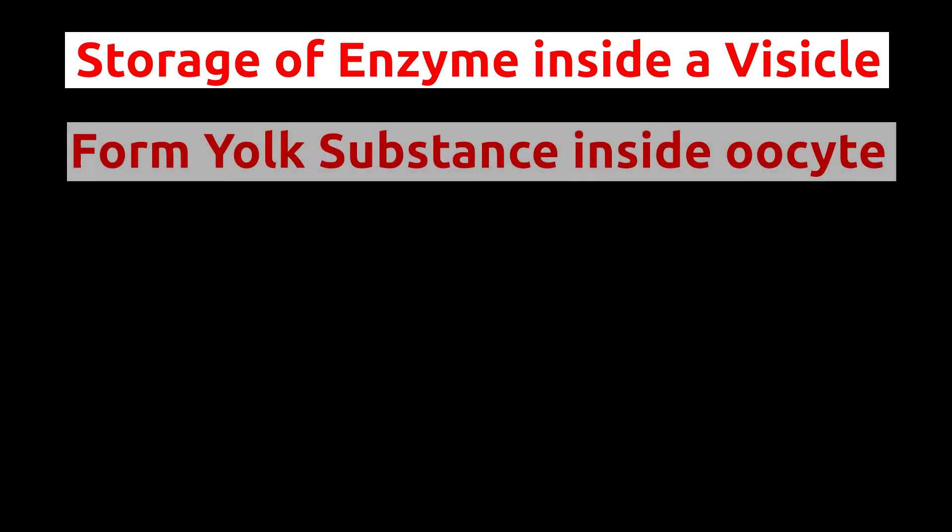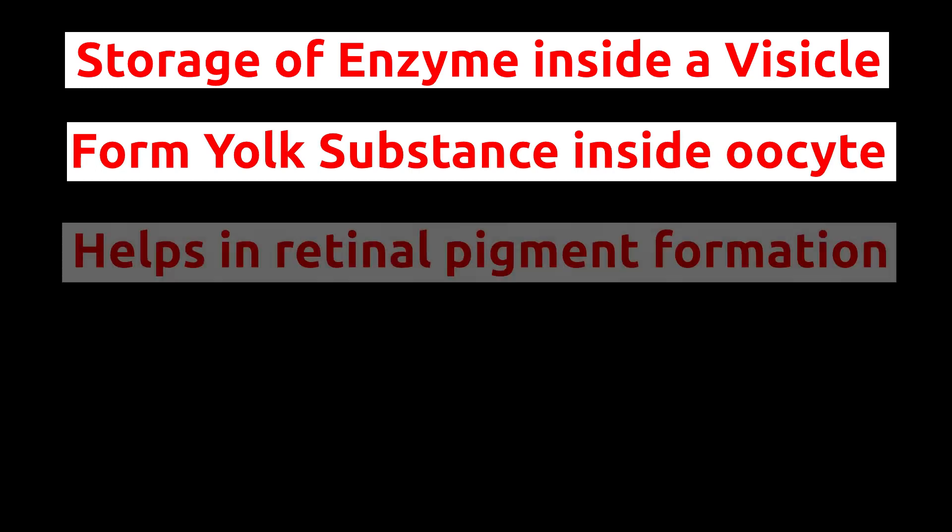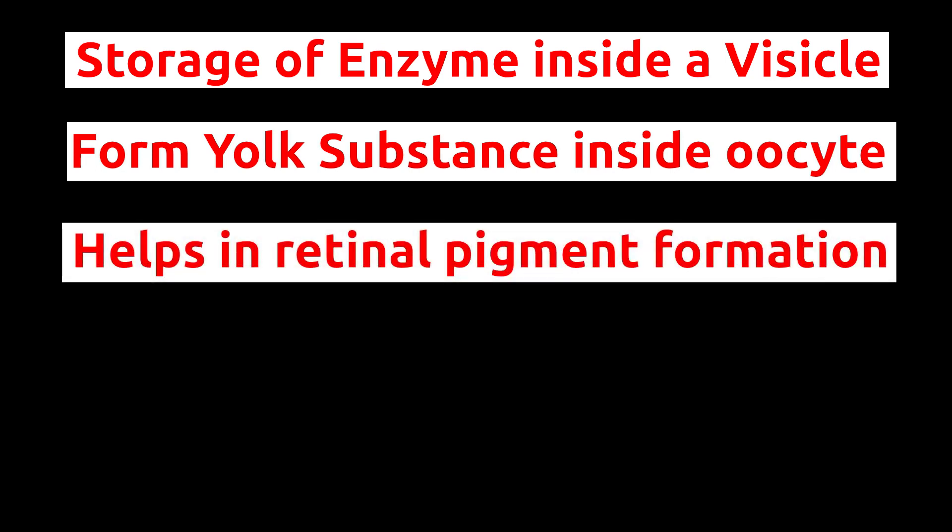Golgi complex forms certain yolk substances in the developing oocytes. Oocyte is the immature form of a female egg cell. Golgi apparatus helps in retinal pigment formation in the retinal cells. Retinal pigment helps in absorbing light.